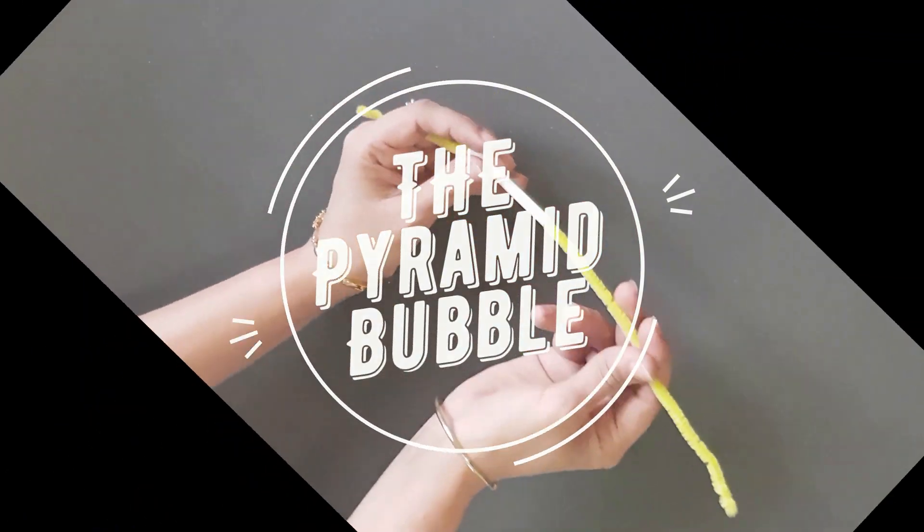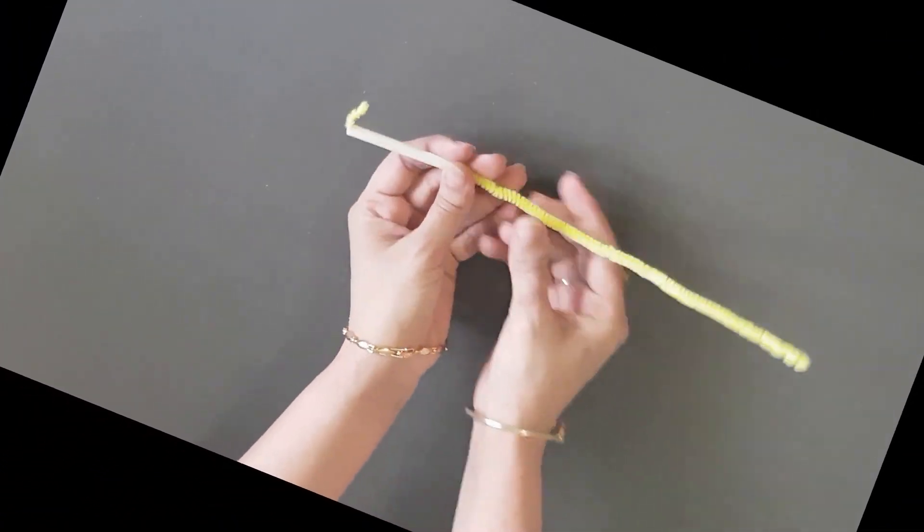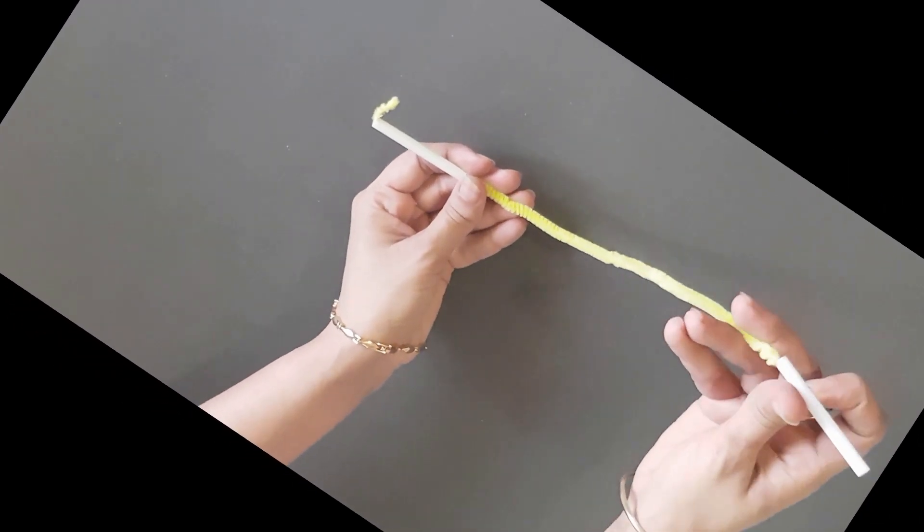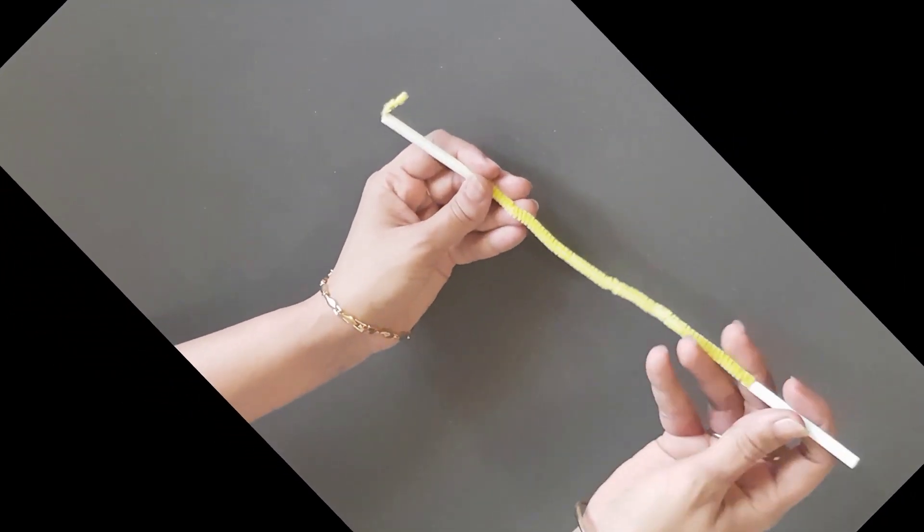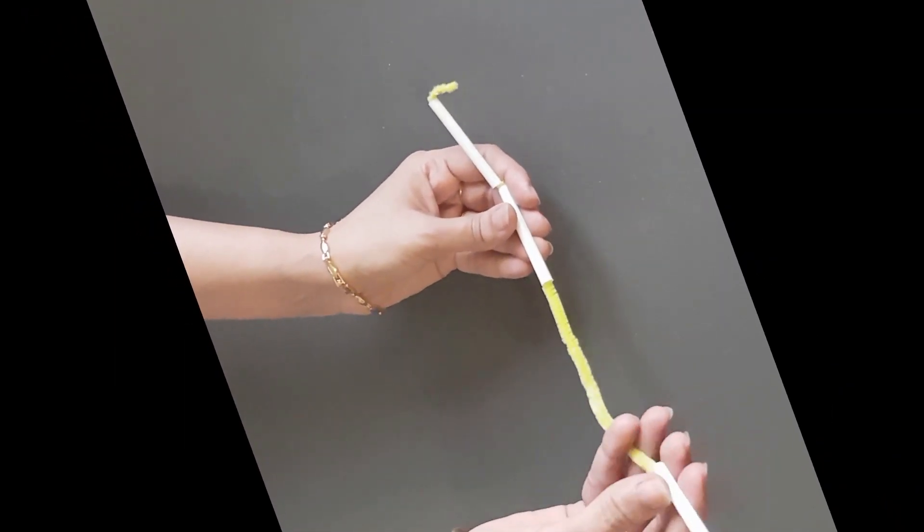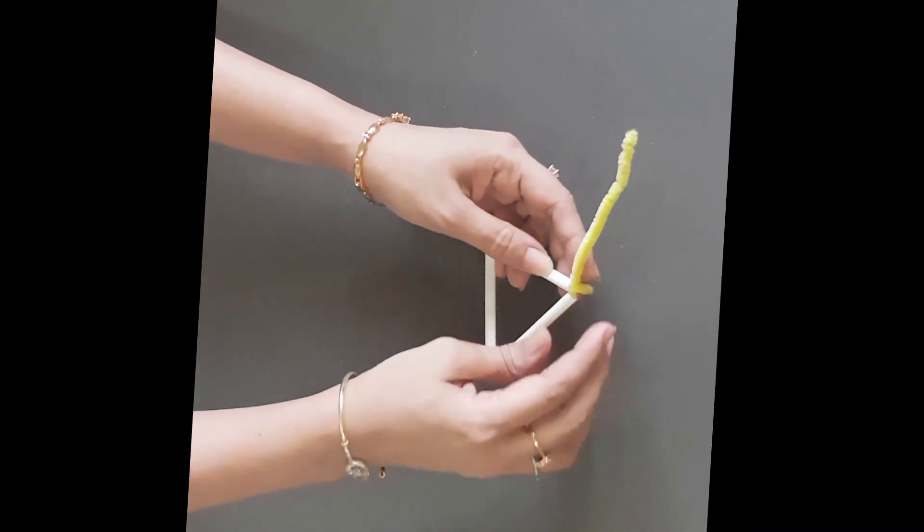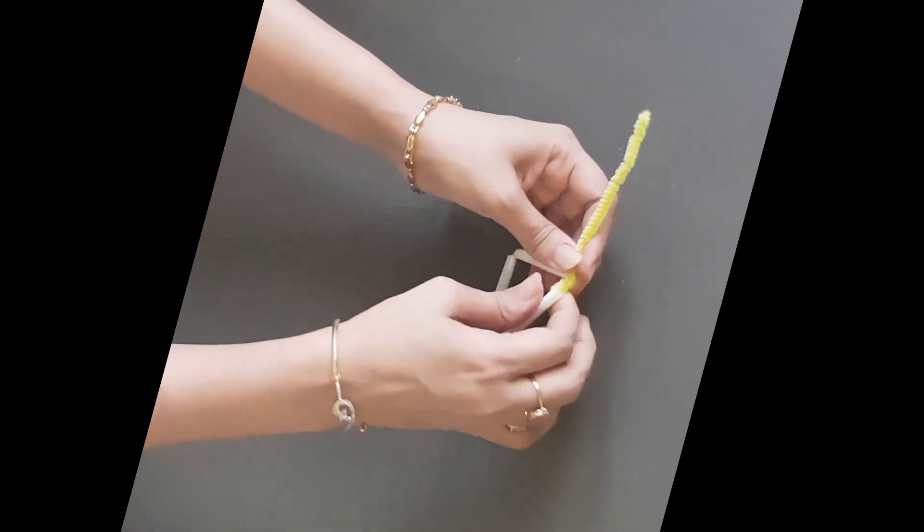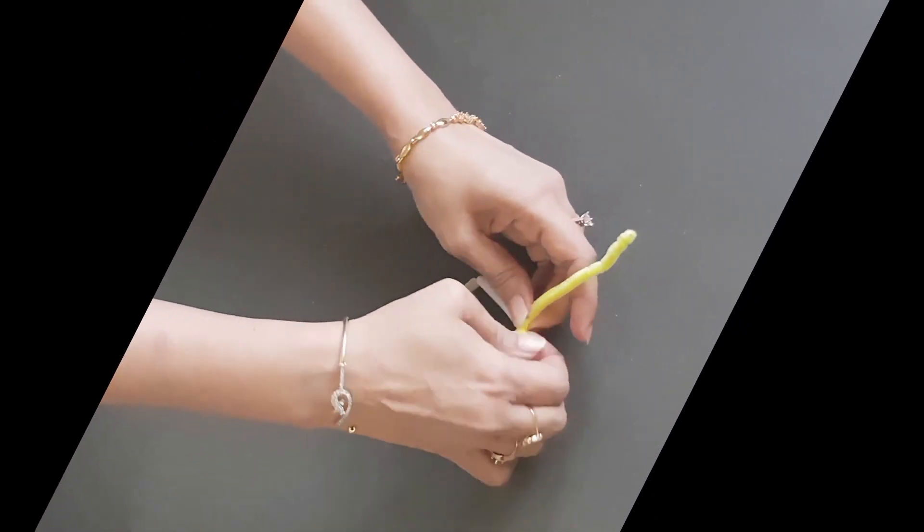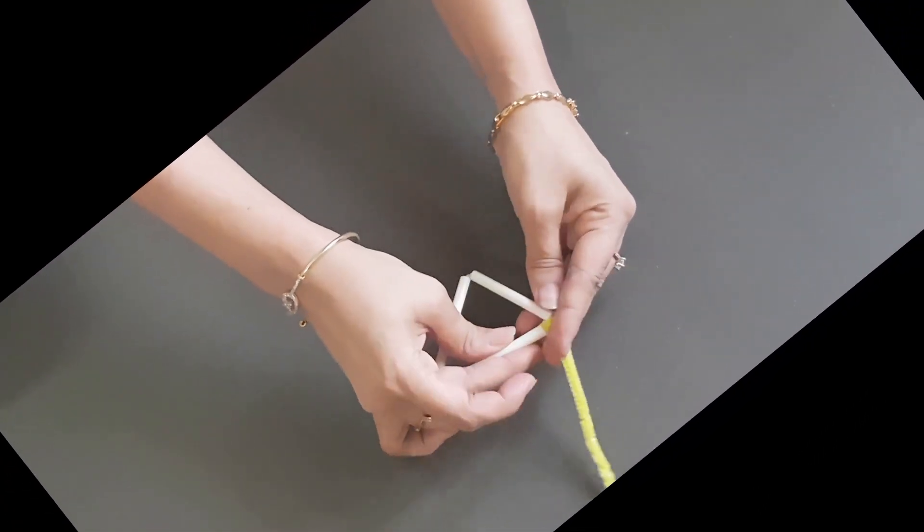I'm going to insert one straw and bend this side a little bit so it doesn't get out. I'm going to be needing three straws. How many sides in a triangle? Three. Yes, that's why we are taking three straws. Now I'm going to twist this shorter end firmly so that we have a secure shape.